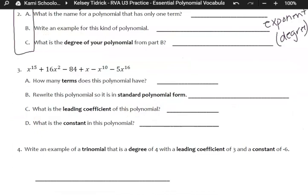How many terms does this polynomial have? So we can count our terms. 1, 2, 3, 4, 5, 6. Six terms.